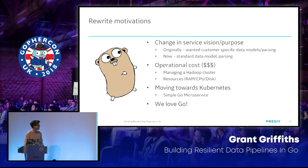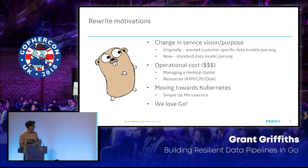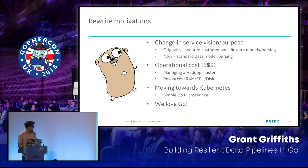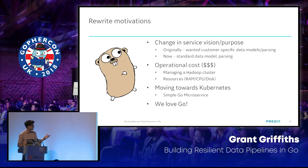A little bit about the rewrite motivations: it actually wasn't really about performance — it was more about operational costs. It's extremely expensive to operate a Hadoop cluster, especially when you don't really need to. Having to manage that just to parse data points and write them to Cassandra was way overkill. We made an architectural decision to move to a stateless app that was much more lightweight. The state is stored in Kafka, so if your pipeline goes down while processing data, you can not mark the offset to Kafka and replay that message later. We're also moving more toward a Kubernetes model — it's just a simple Go microservice, and we love Go.